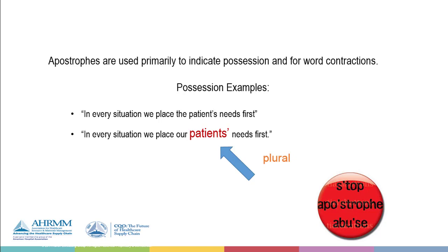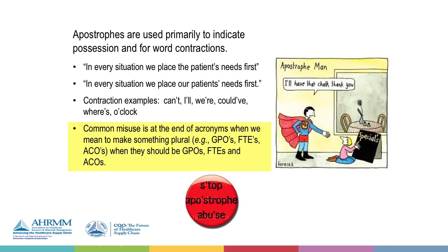'Participants apostrophe' — S apostrophe — indicates lots of participants. The common misuse of the apostrophe is when making an acronym plural. So for something like GPO, if you're going to make it plural, you'd write G-P-O-S. You would not use apostrophe S.